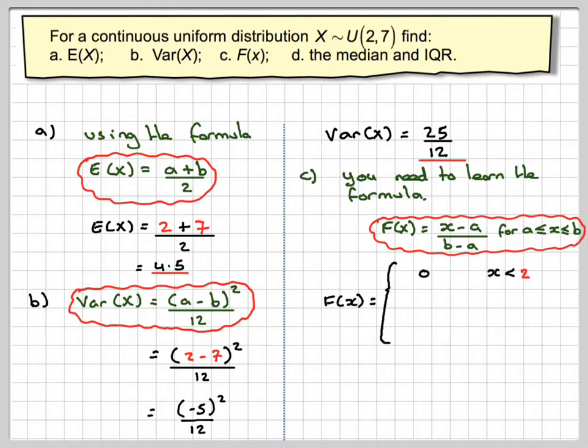So F(x) will be equal to 0 if x is less than 2, then (x - 2) over (7 - 2) between 2 and 7, and 1 if x is greater than 7. So writing that out will look like that.